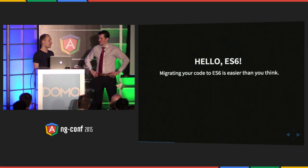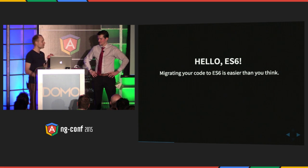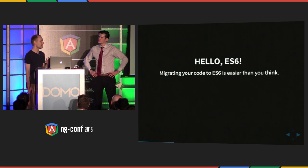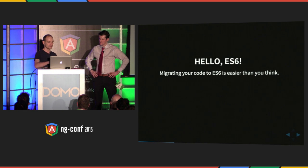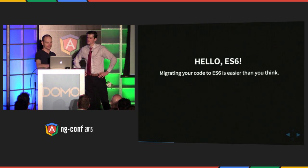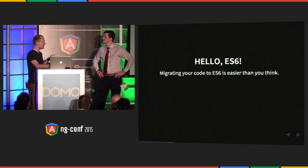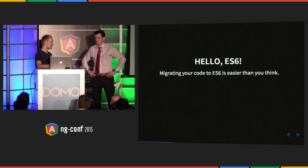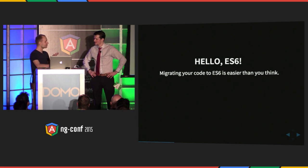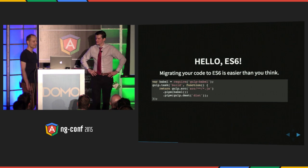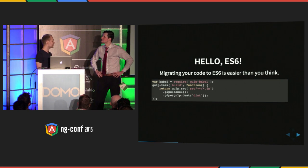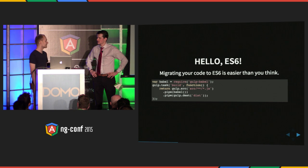All your ES5 code is actually ES6, but you might want to use all the new features in ES6 that will make migration easier in the future. You can start today. Since all your ES5 code is valid in ES6, you can write everything in ES6 — but you need to transpile it somehow, because browsers don't support ES6 yet. It's quite easy though. This is five lines of code: you just create a Gulp task and use Babel. That's it.